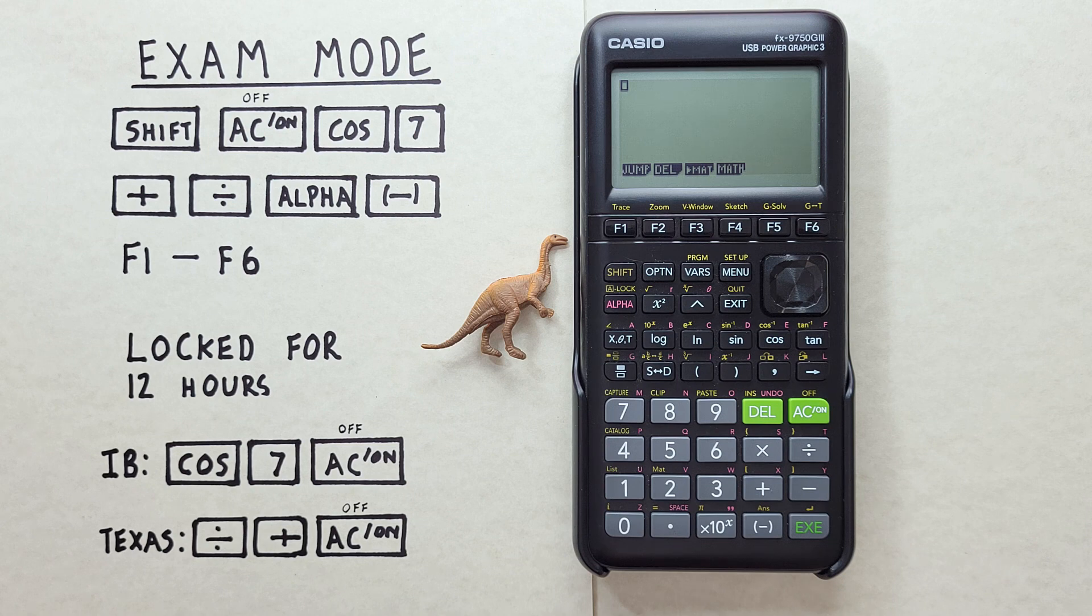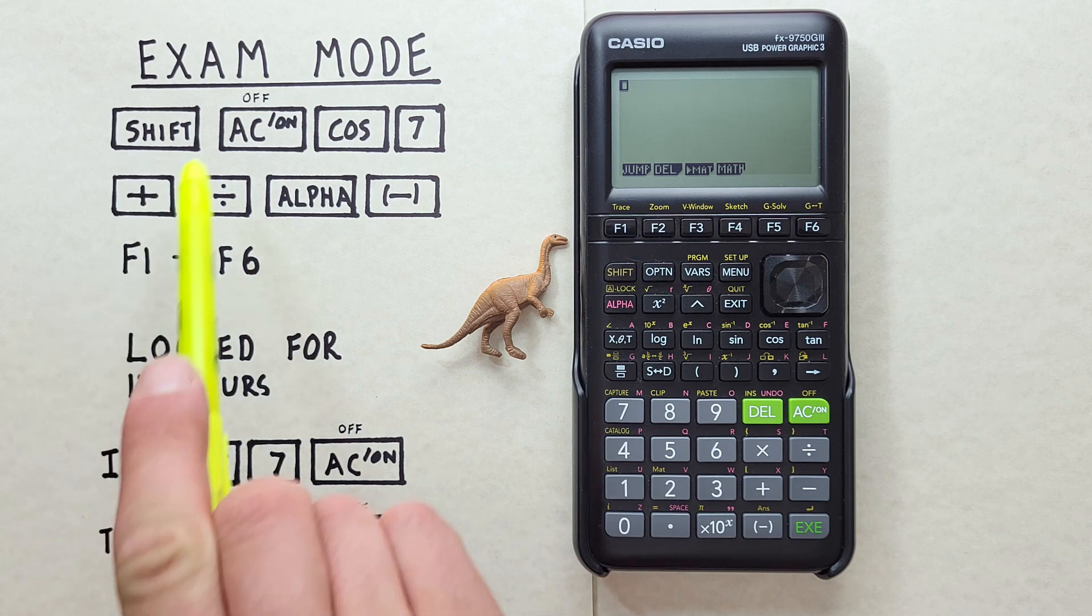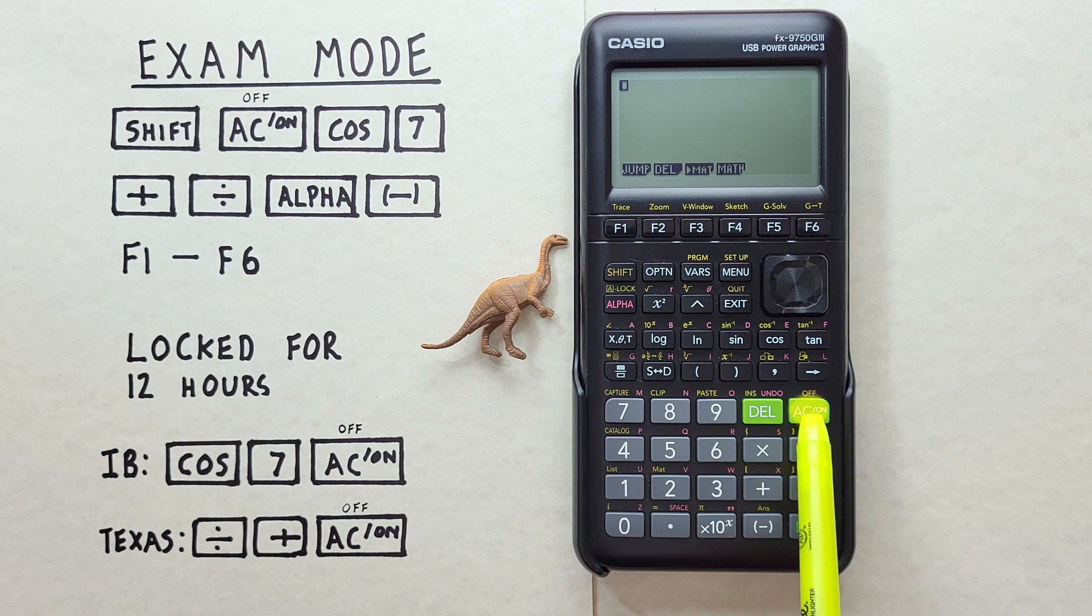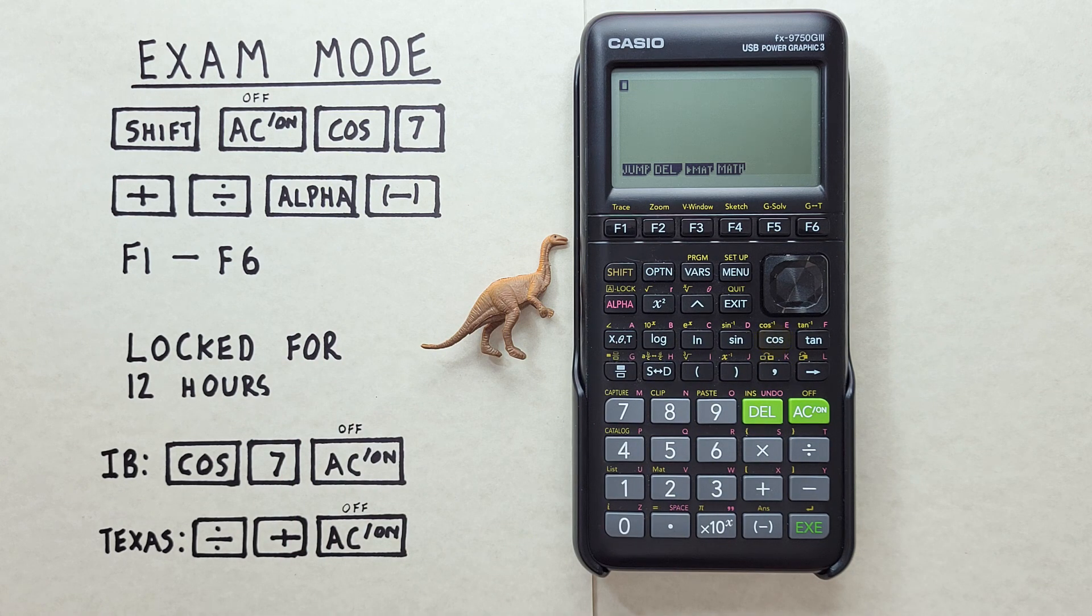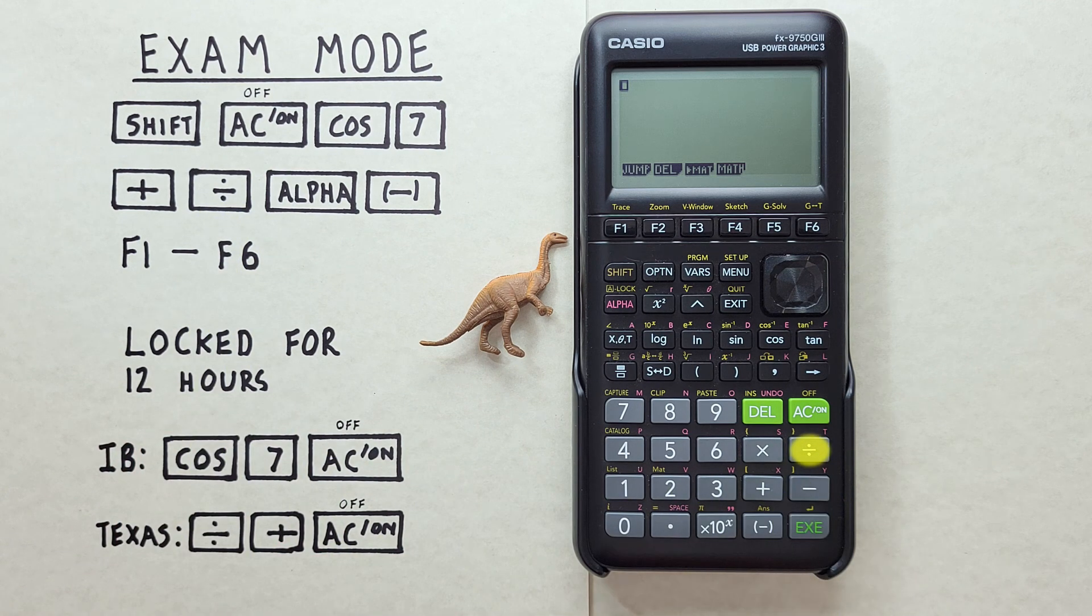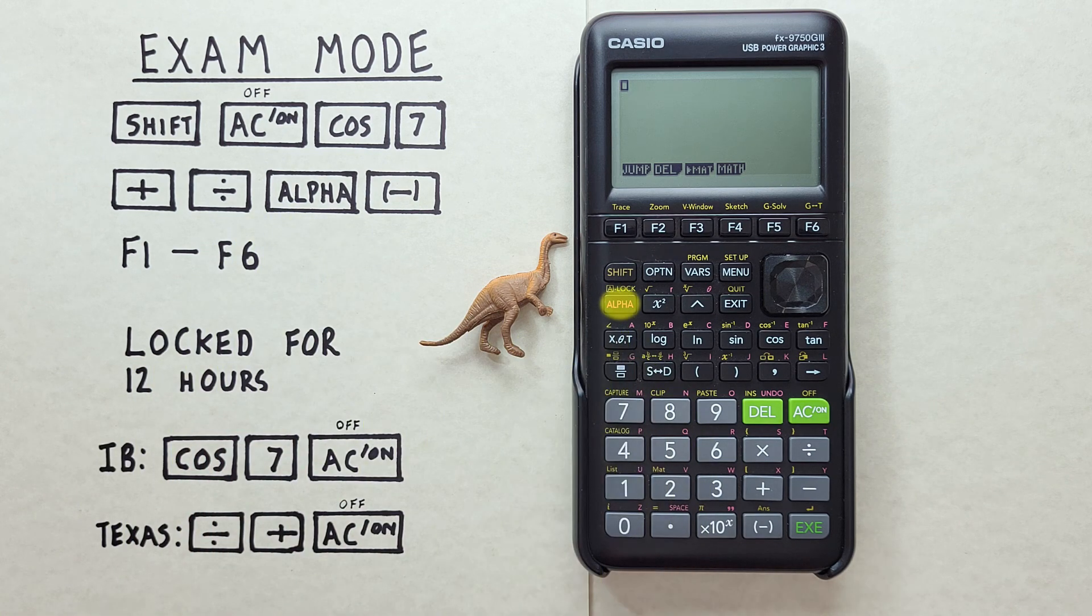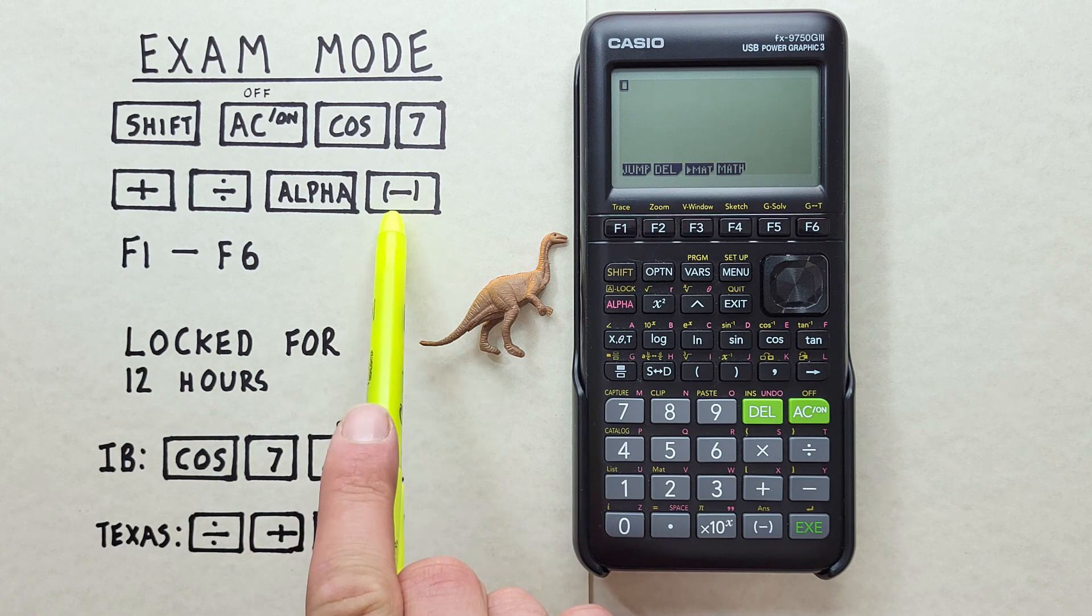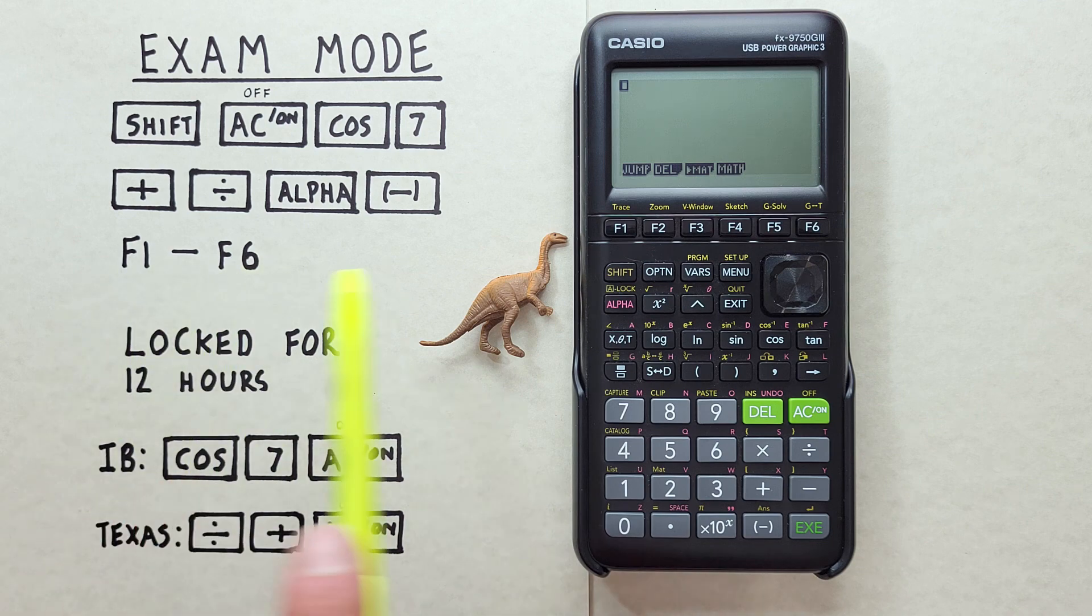To do that, we'll use the shift key that looks like this, located here. The AC or on off key that looks like this, located here. The cos key that looks like this, located here. The seven key that looks like this, located here. The plus key that looks like this, located here. The division key that looks like this, located here. The alpha key that looks like this, located here. The negative key that looks like this, located down here. And the function or F1 through F6 keys that look like this, located across the top here.